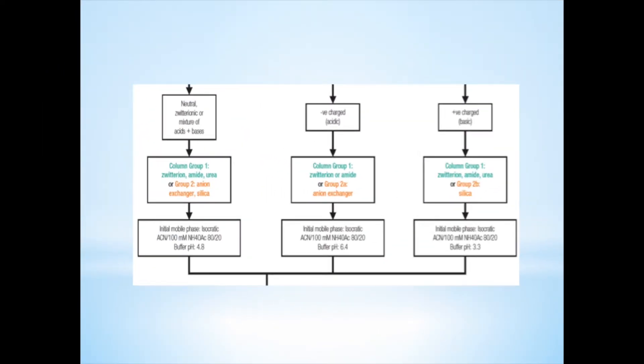To continue developing the method, after choosing the electrical charge of the analyte, we must choose a column. Usually, silica or amide are the most popular. Remember, after column selection, we must select buffer and mobile phase conditions based on the type of column selected. Afterwards, the solution can be analyzed.